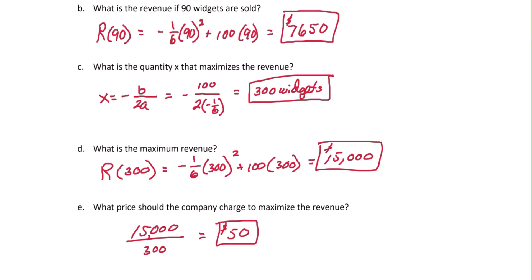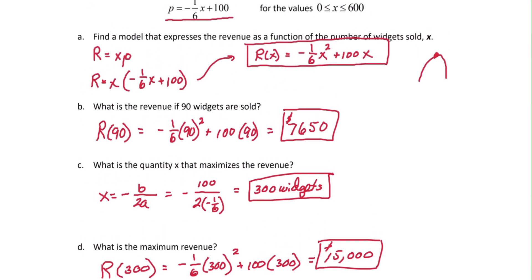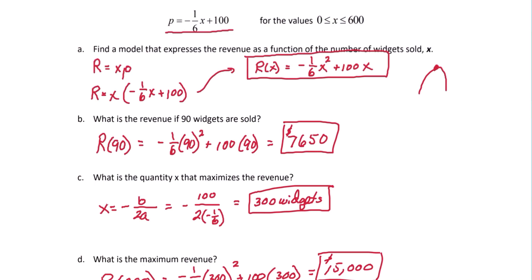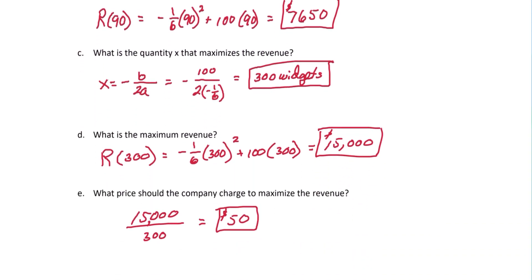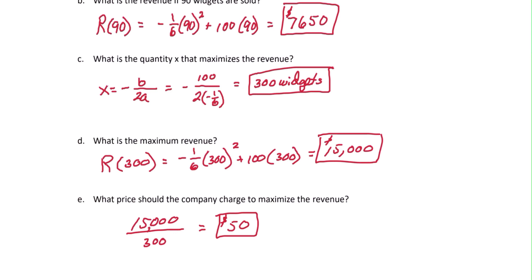An alternate way to approach this is to remember that you were given the demand equation at the very beginning. That's p equals negative one-sixth x plus 100. We can use this to find the price as well.